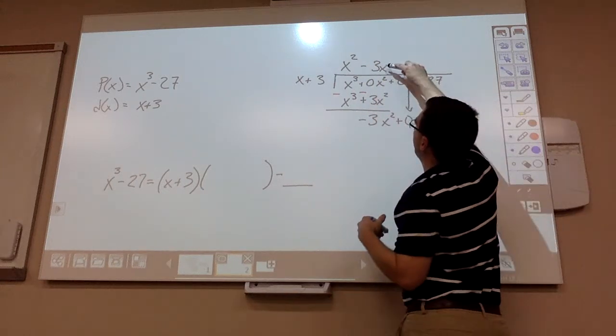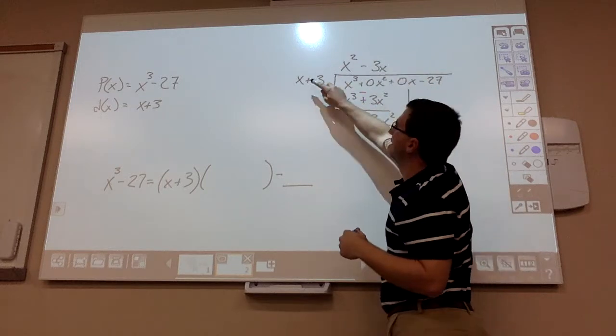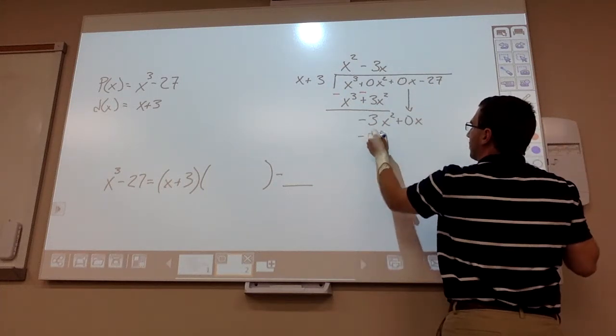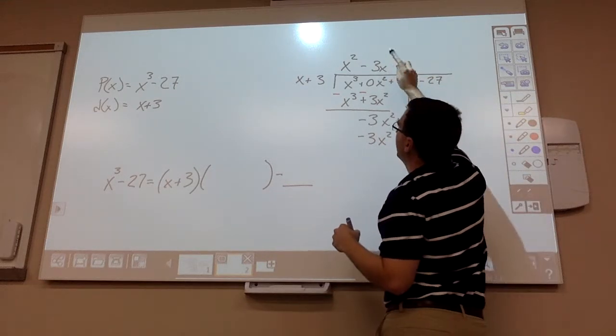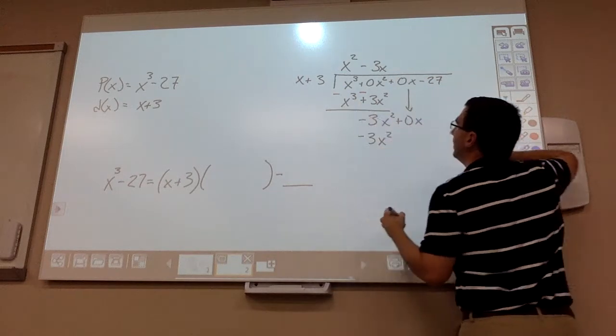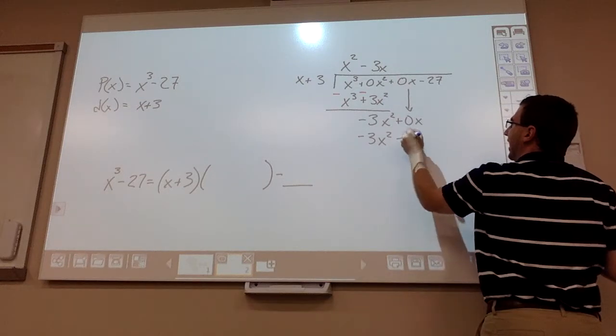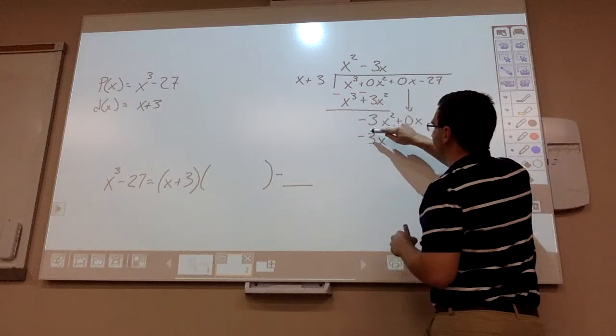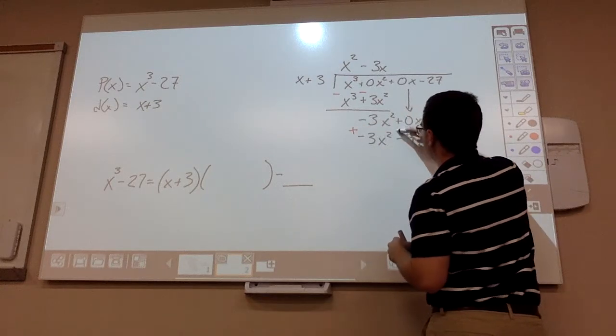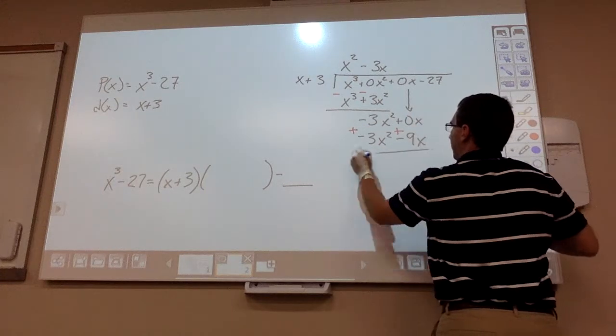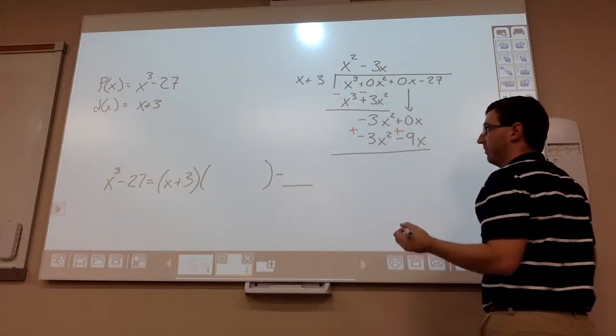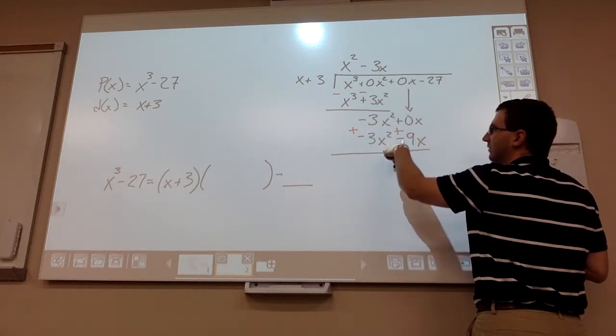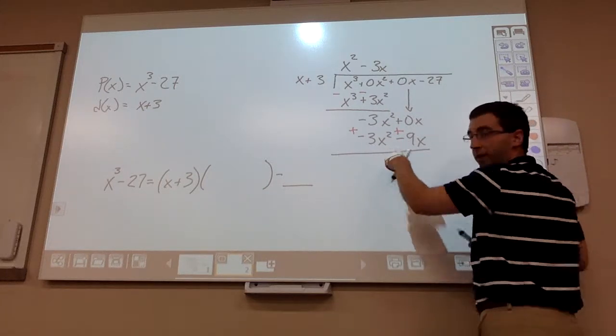And then multiply. -3x by x, well that should be -3x². And then -3x times a positive 3, well that should give you -9x. Change your signs. Start adding and subtracting. -3x² minus 3x², I'm sorry, -3x² + 3x², those two should cancel out.